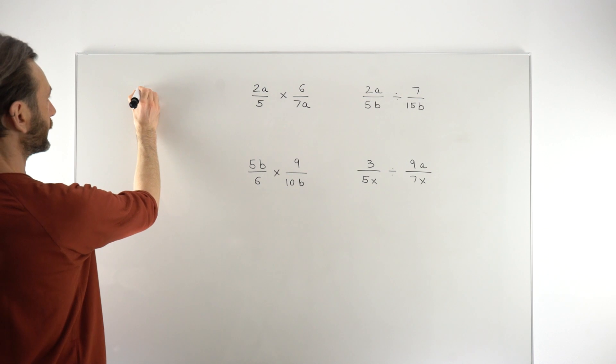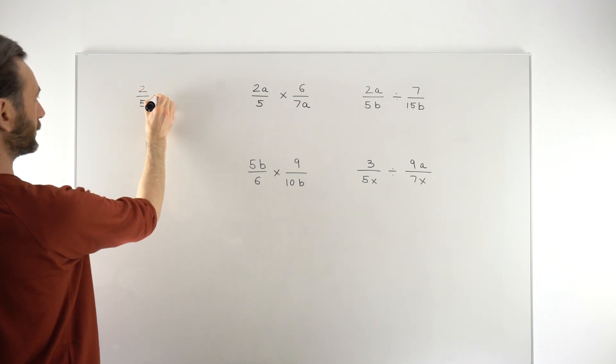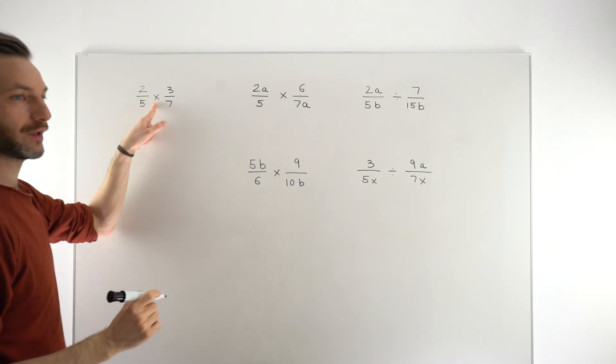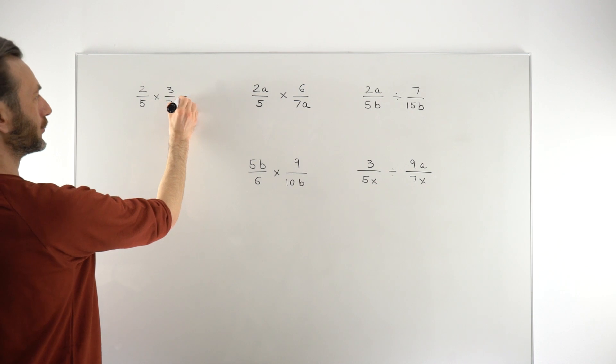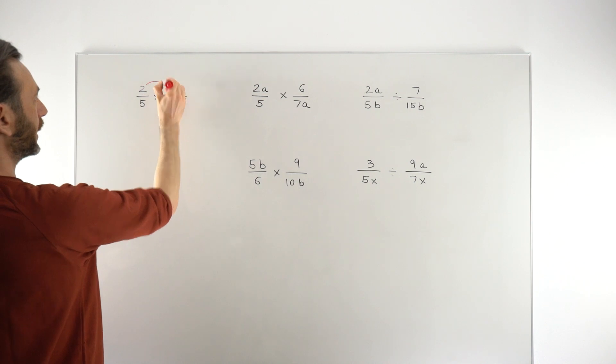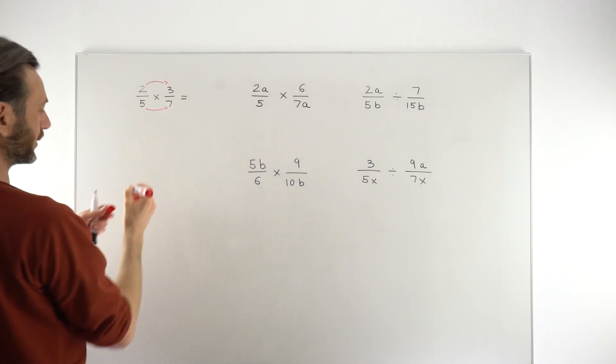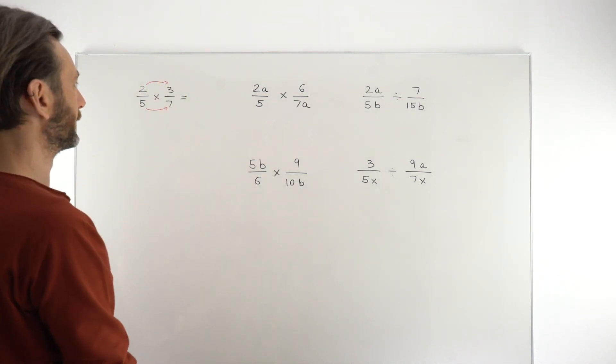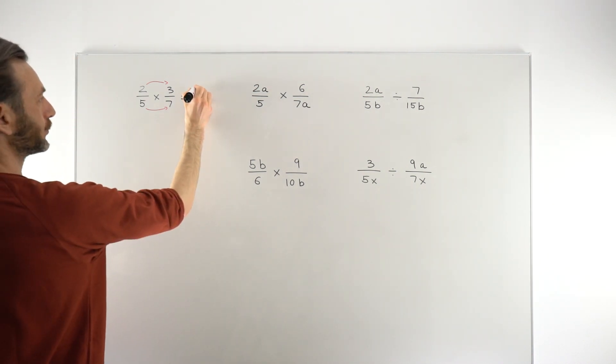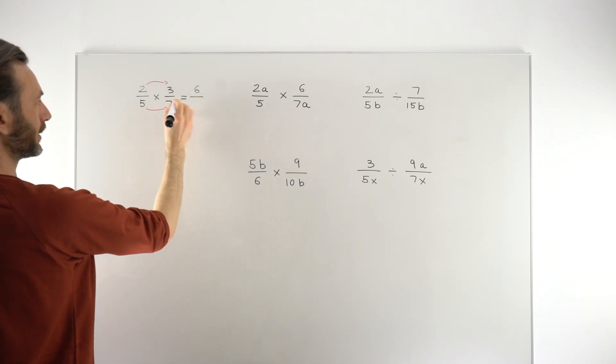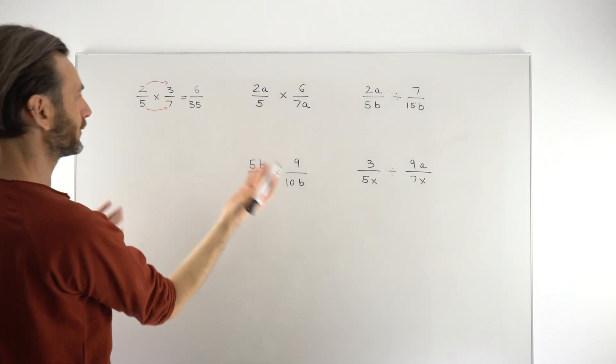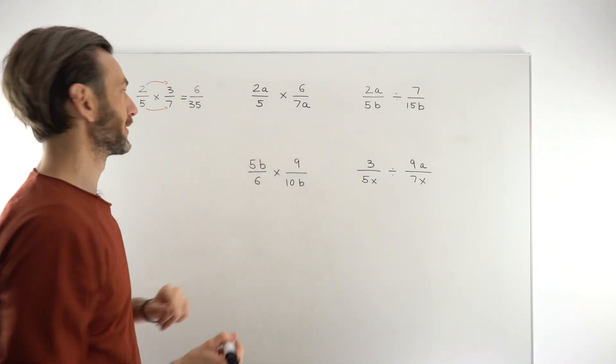So if you had, say, 2 fifths times 3 over 7, multiplication is the easiest operation with fractions, because all you do is multiply the two top numbers together, so the two numerators, and multiply the two bottom numbers, the denominators, and then get your result. And then if you can simplify that, you simplify it, otherwise you just leave it. So 2 times 3 is 6, divided by 5 times 7, 35. Quickly check and see if that can be simplified. There's no common factor there, so that's basically us done.